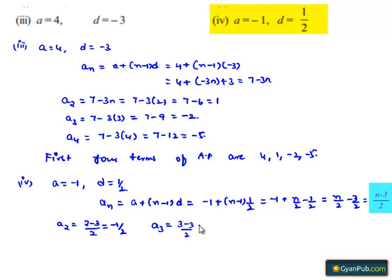That is (3-3)/2 which equals 0. And a₄ is found by substituting 4 for n: (4-3)/2 which equals 1/2.